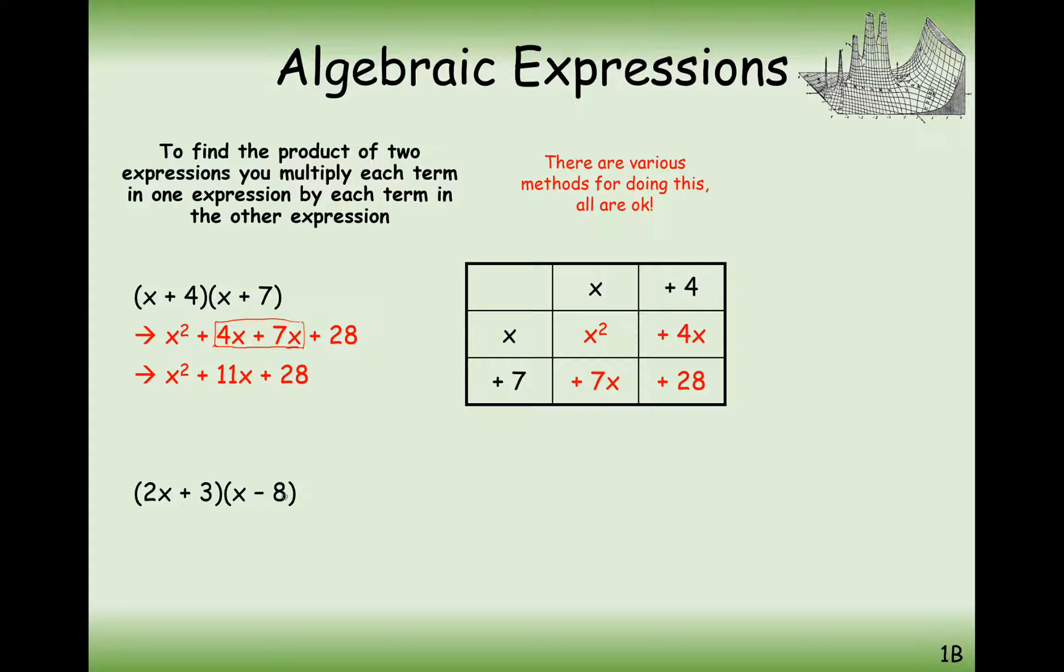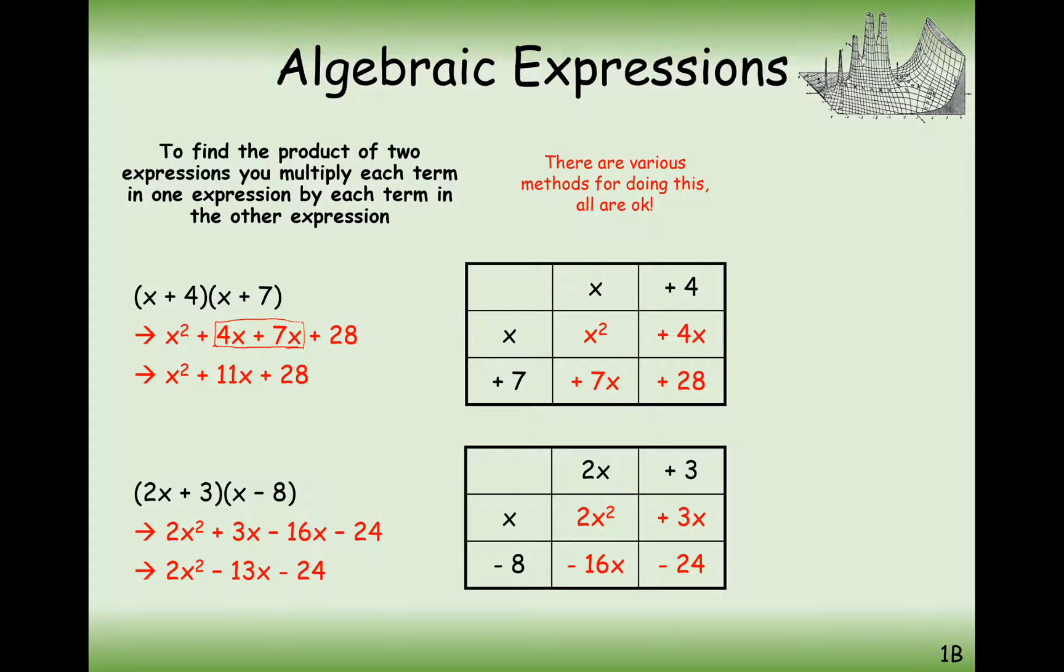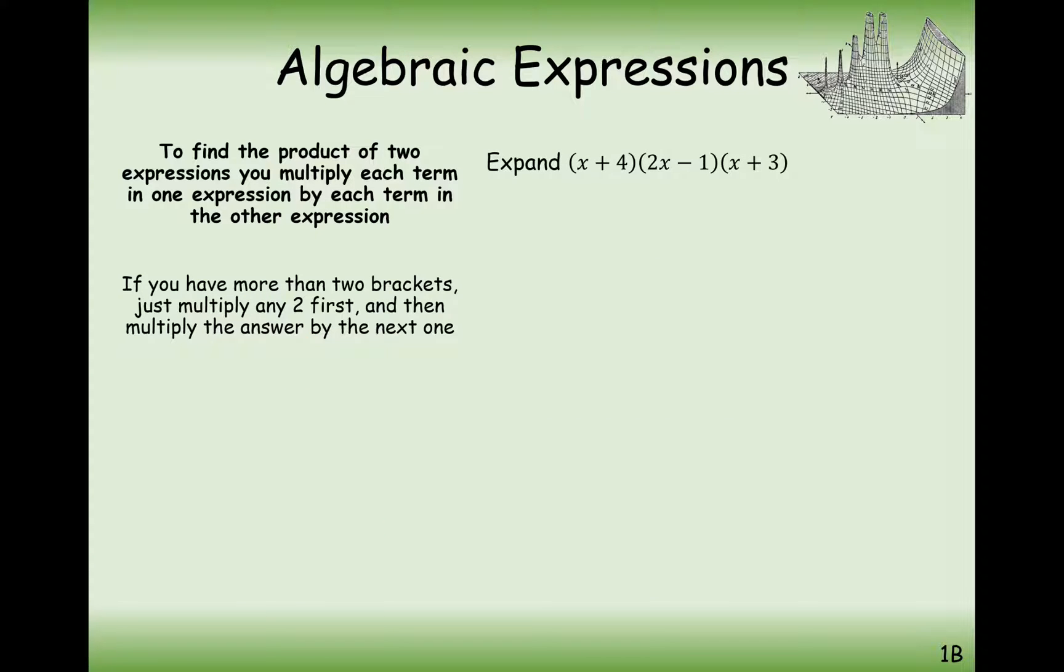These methods are particularly good when you've got a trickier one like this one here where it's a negative and a positive and maybe 2x is involved as well. So just as with before, make sure that each of your terms are going along the top and along the side. Multiply each of your terms to get the values inside the boxes and simplify as you do so as well.